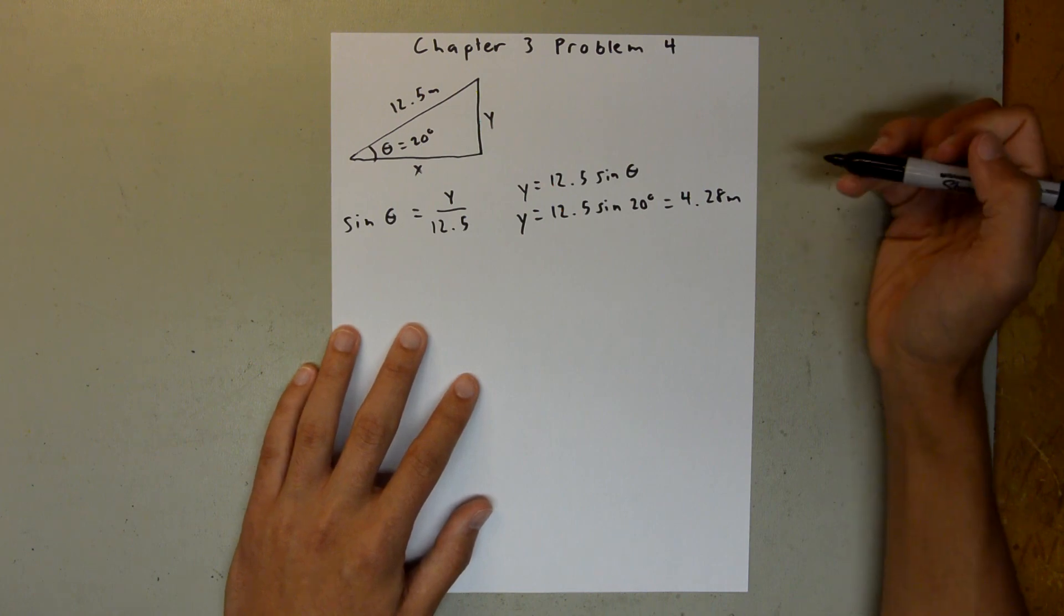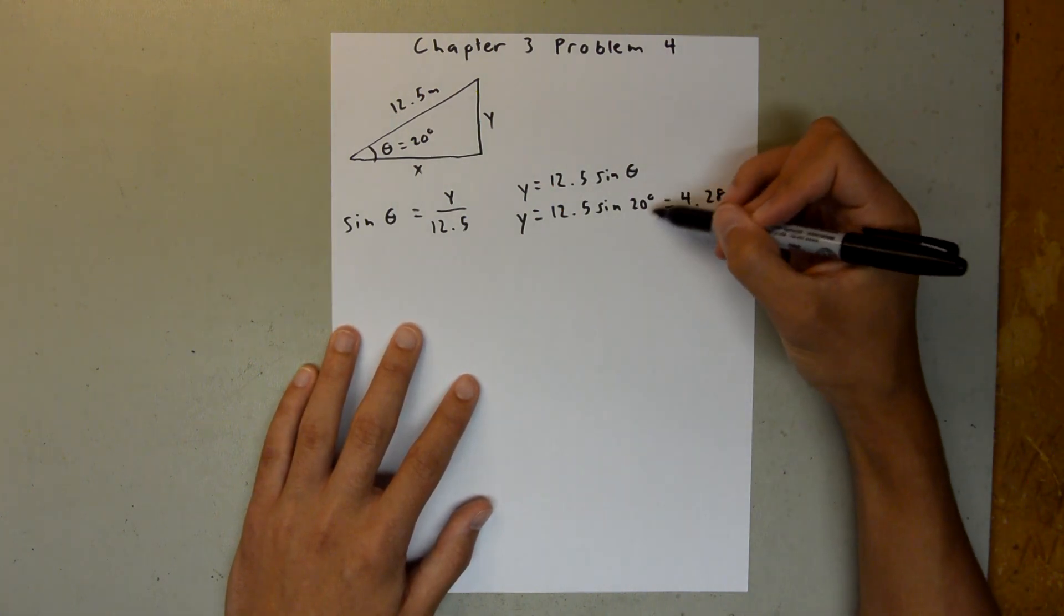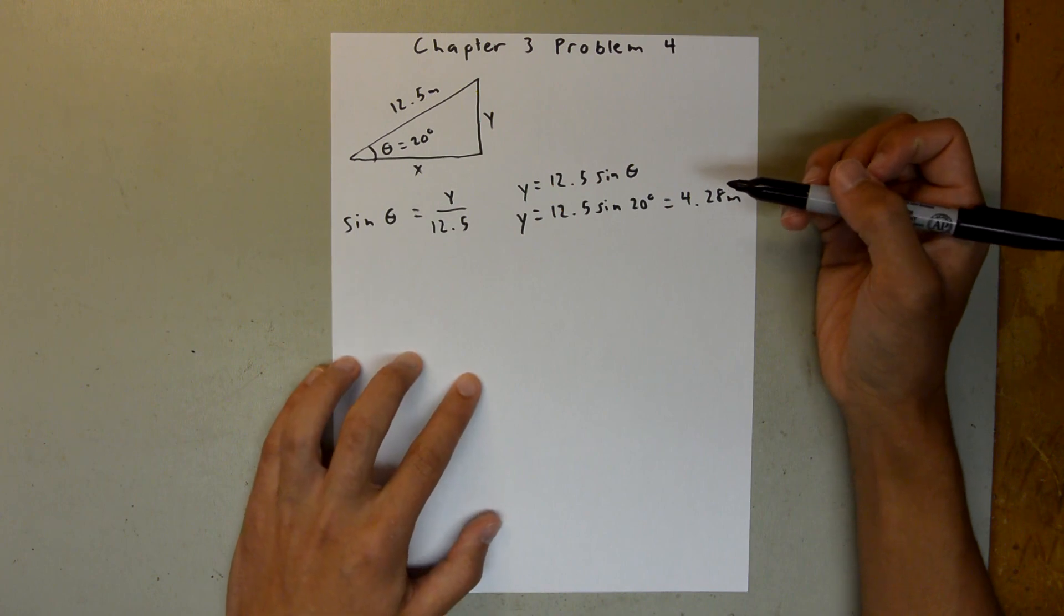And if you've got something different, I would just double-check to make sure that your calculator is in degree mode, not radian mode. That will definitely throw off your answer.